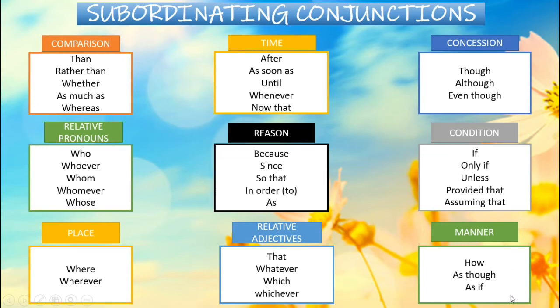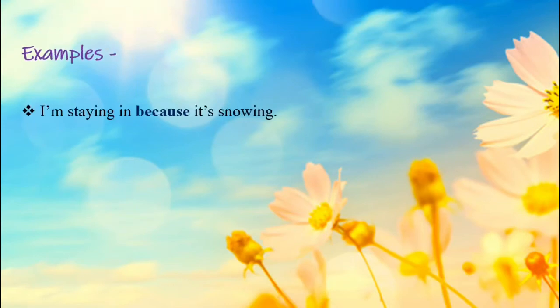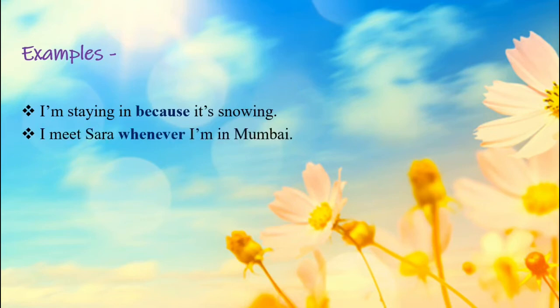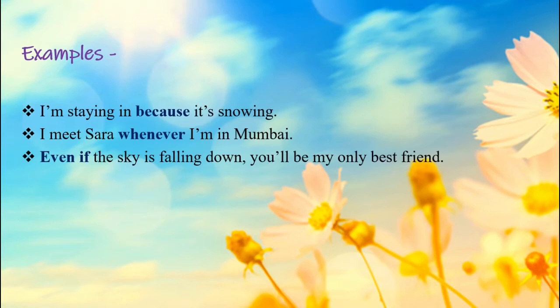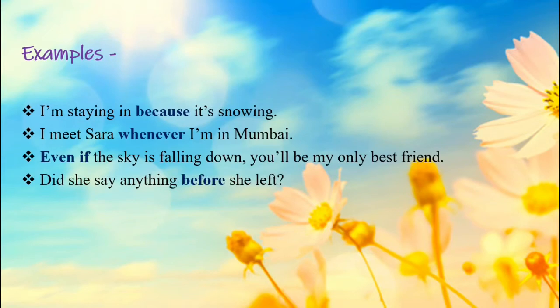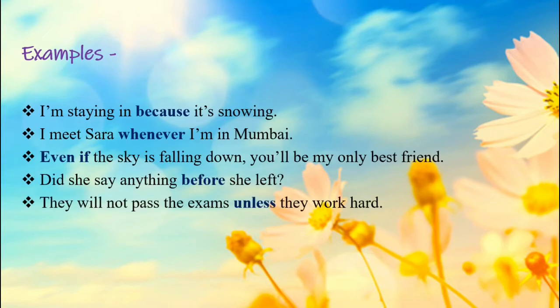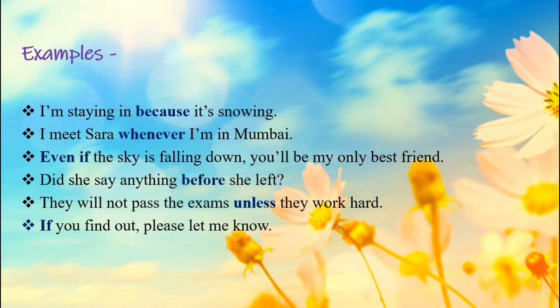These are the subordinating conjunctions. Let's see a few example sentences. I am staying in because it's snowing. I meet Sara whenever I am in Mumbai. Even if the sky is falling down, you'll be my only best friend. Did she say anything before she left? They will not pass the exams unless they work hard. If you find out, please let me know.